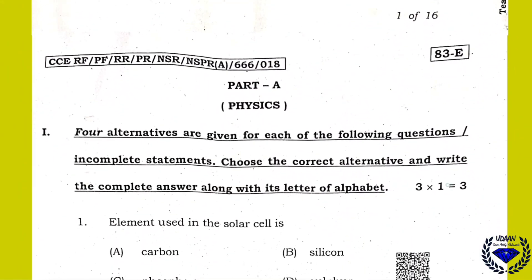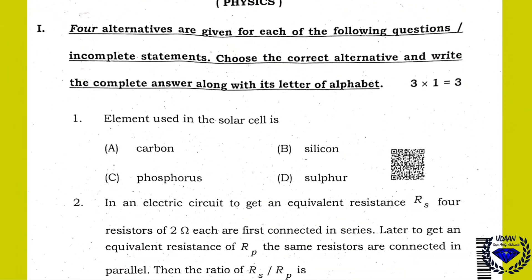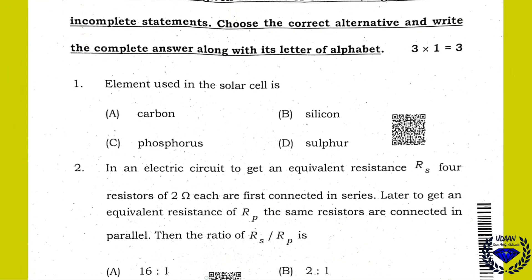So I will just start with question number 1 here. Question number 1 is: the element used in the solar cell is what? Silicon. As I explained already in my previous video, silicon is a metal which is used in solar cells.